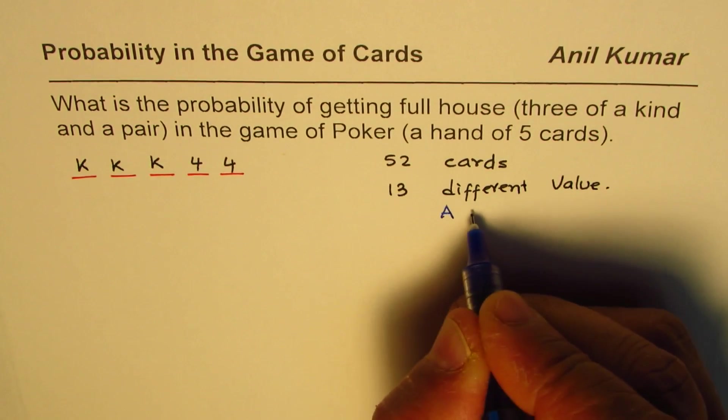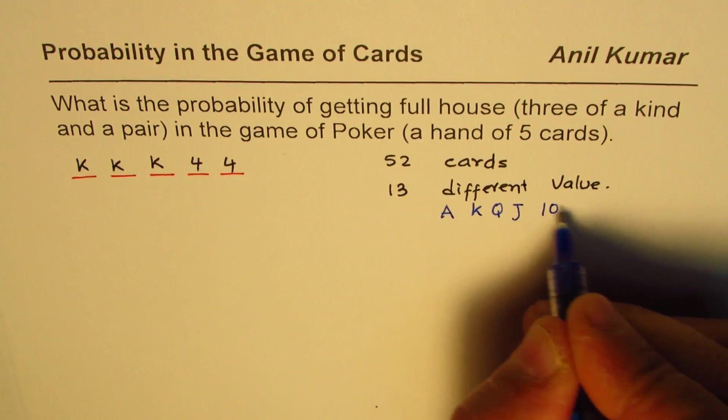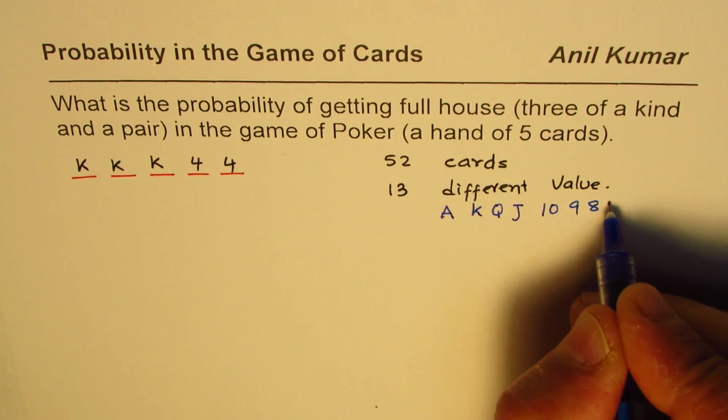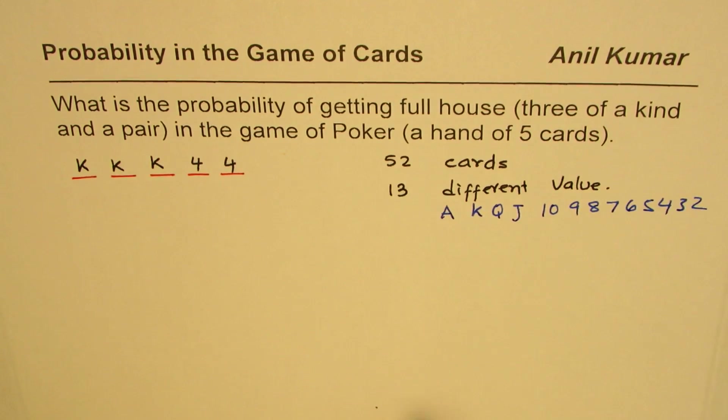Thirteen different values - we mean ace, king, queen. Like this: ace, king, queen, jack. These are the face cards and then we have numbers 10, 9, 8, 7, 6, 5, 4, 3, 2, right?